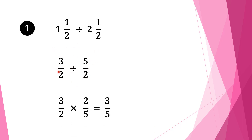We keep the first fraction as it is: 3 over 2. We change the division sign into multiplication and take the reciprocal of the second fraction — we flip it over. It is 5 over 2, so we write it down as 2 over 5. Now we check whether we can cross-cancel: we can cancel 2 and 2. So 2 goes into 2 once. Now we multiply our numerators: 1 times 3 is 3, and our denominators: 5 times 1 is 5. So our final solution is 3 over 5.